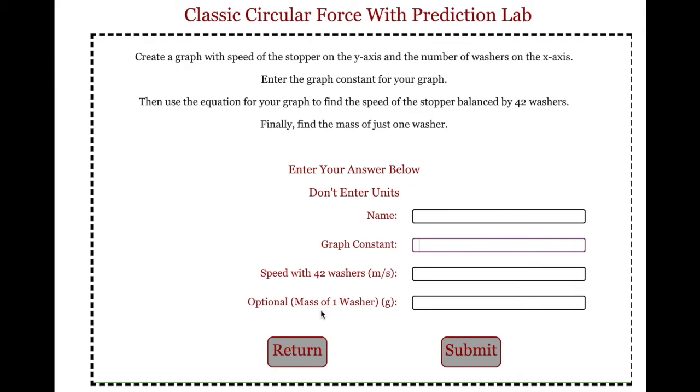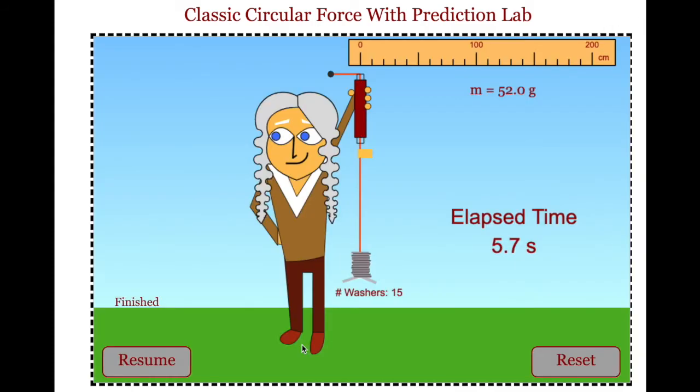And then optionally, the teacher could have the student figure out the mass of just a single washer. Every student will have a different mass, but the washers will all weigh the same. So, for instance, this student has 15 identical washers. A different student would have washers with a different mass, but they would all be identical.